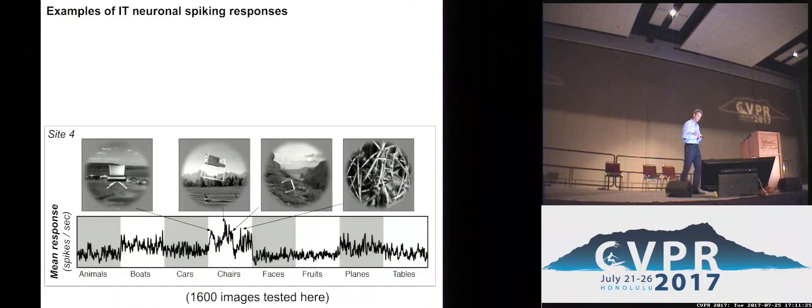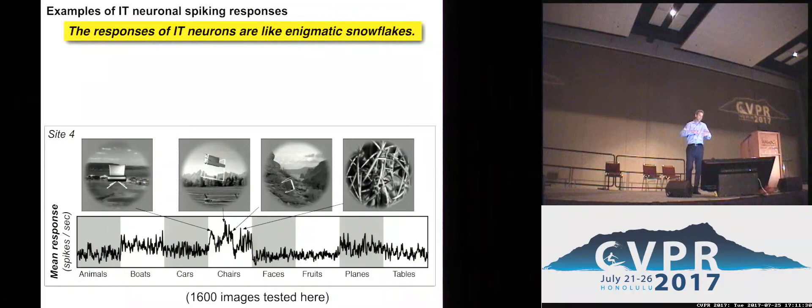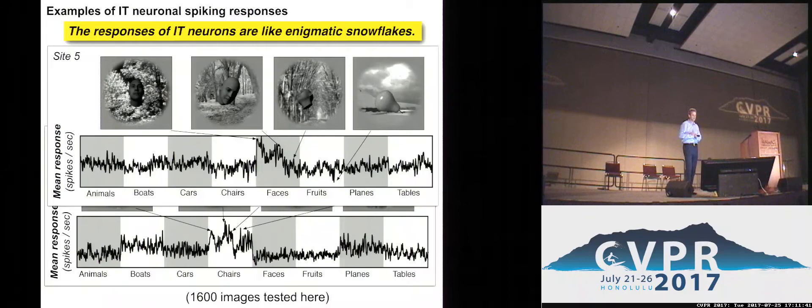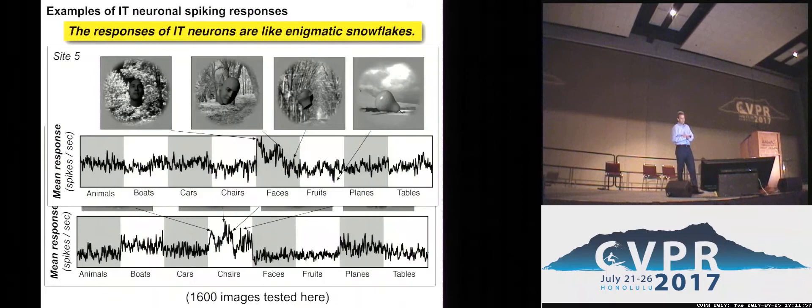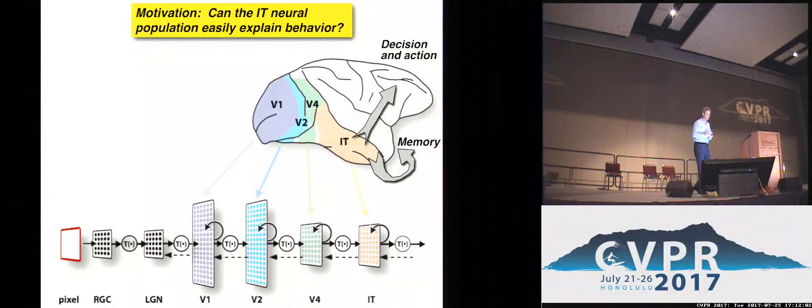People have spent careers really trying to understand what these neurons care about in the image — it's been a very challenging problem in our field. IT neurons are like enigmatic, non-understood snowflakes; they appear individually unique. Here's another example from a neuron you might call a face neuron: it responds more to images of faces than to other things on average, but in detail it likes some images of faces better than others, so it's incorrect to strictly think of it as a categorical neuron.